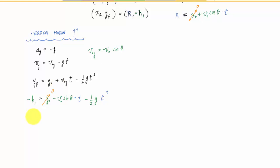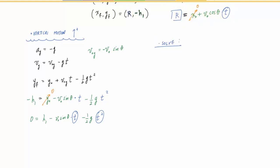Substituting yf = negative H1 and y0 = 0, this becomes: 0 equals H1 minus V0·sin(θ)·t minus (1/2)·g·t². My unknowns right now are t and the distance R. I'll call the horizontal equation (1) and the vertical equation (2). I'll rearrange equation (1) to solve for time t, then substitute that time into equation (2).